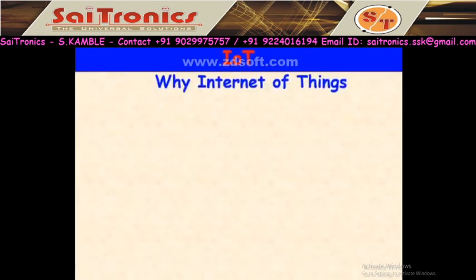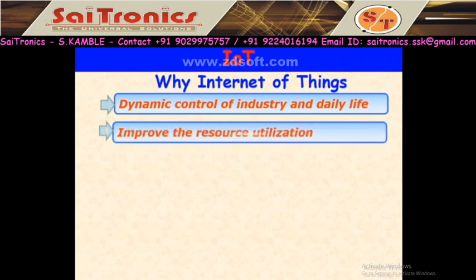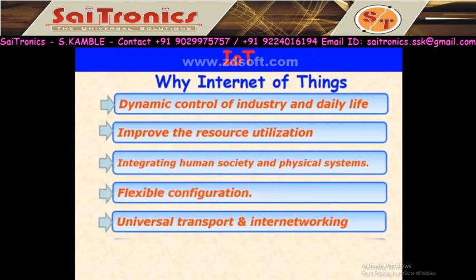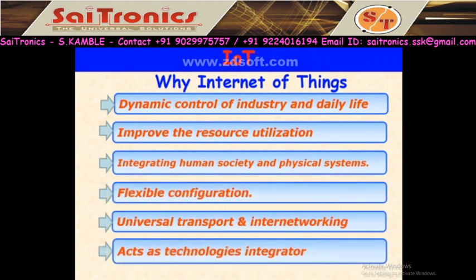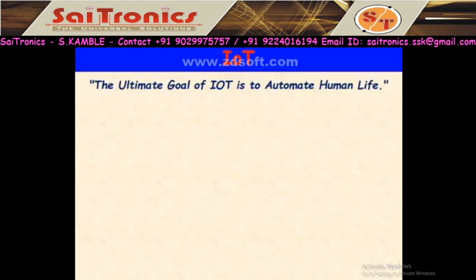Why are we using IoT? Because of dynamic control of industry and daily life, improved resource utilization, integrating human society and physical systems, flexible configuration, universal transport, and internet working access technologies. In short, the ultimate goal of IoT is to automate human life — we want automation, and for that IoT is used.